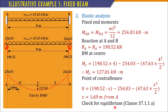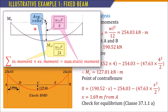Always check the equilibrium condition: internal moment + external moment = maximum static moment WL²/8. Joining the two end moment points (both 254.03 kNm), the value at centre gives the external moment contribution of 254.03 kNm. Adding the internal span moment 127.01 kNm gives a total that must equal WL²/8. Verify this by computing WL²/8 with W = 47.63 and L = 8 m. The values should match (any small discrepancy is due to decimal truncation).